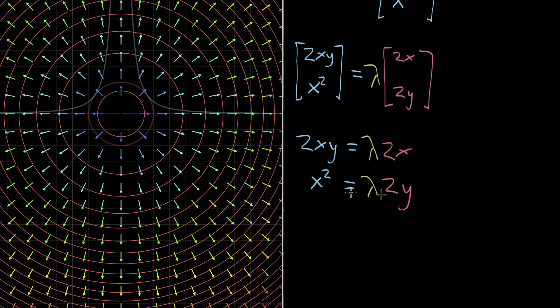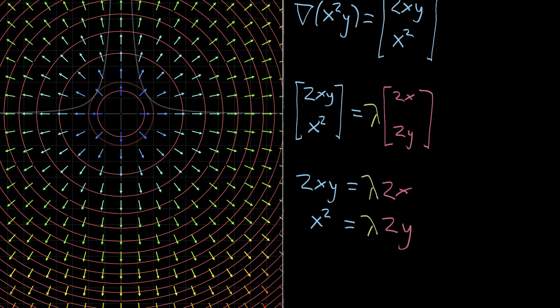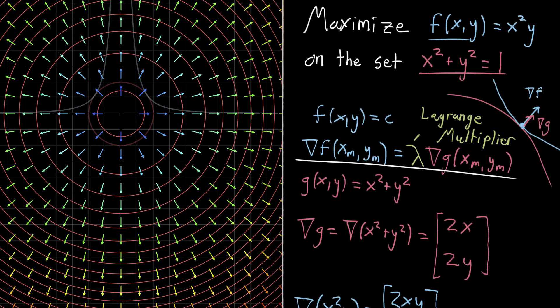And this might seem like a problem because we have three unknowns, x, y, and this new lambda that we introduced, kind of shot ourselves in the foot by giving ourselves a new variable to deal with. But we only have two equations. So in order to solve this, we're going to need three equations.